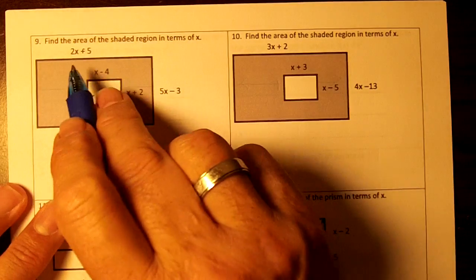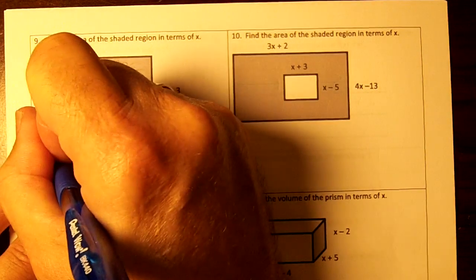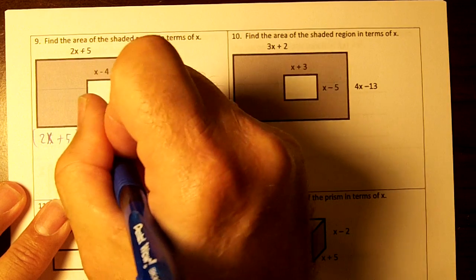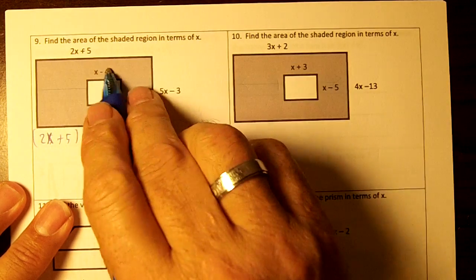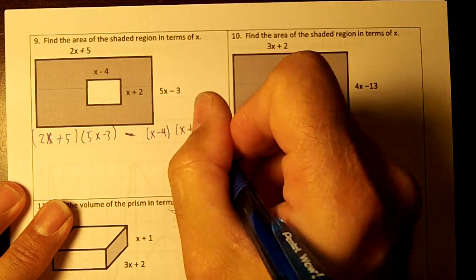So the big rectangle is 2x plus 5 times 5x minus 3, and I'm going to put these side by side and do the foil. And then 5x minus 3 minus, and I'm going to multiply these two, x minus 4 times x plus 2.